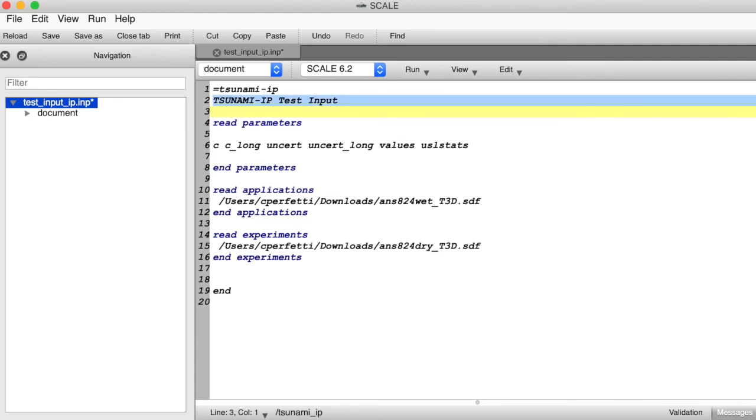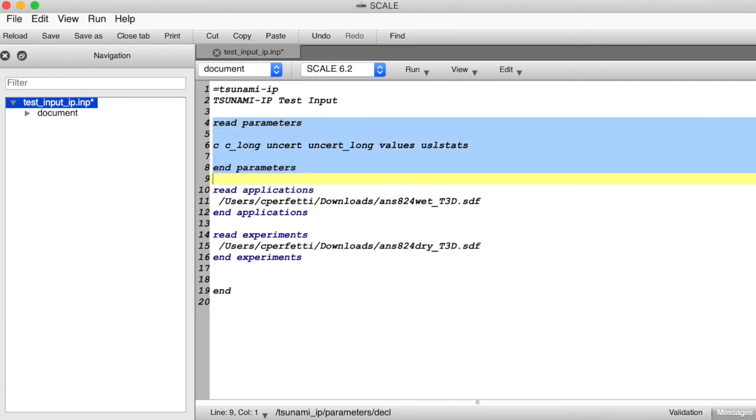The c input parameter tells tsunami IP to compute c sub k's, and the c long parameter tells tsunami IP to print out additional info about how different pieces of uncertain nuclear data contribute to the c sub k. Likewise, the uncert parameter tells tsunami IP to use the standard sandwich equation to estimate the uncertainty in the responses, and the uncert long parameter describes the sources of this uncertainty in more detail.